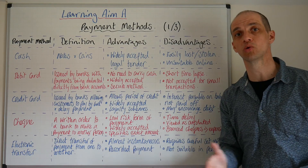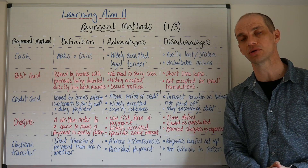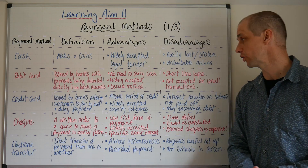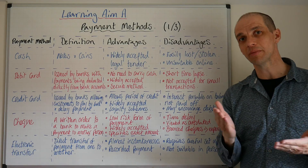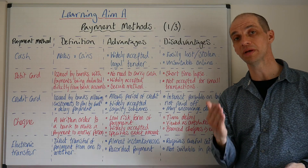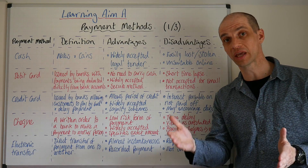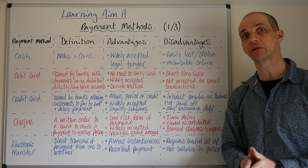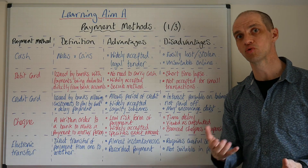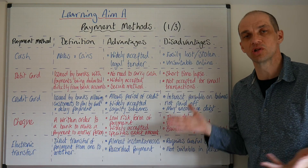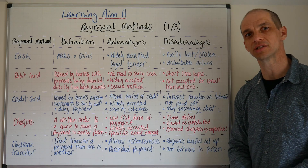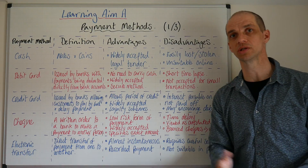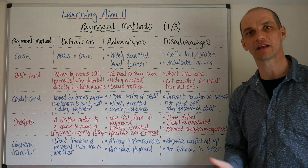There are downsides of course. The first one is that there's a short time lapse between the payment actually being made and it going through — usually about a day or so. Because of that, the money could come out of your account straight away, so you need to make sure you've got sufficient funds and that you're not putting yourself in danger of going overdrawn without an authorised overdraft. It's also not accepted for small transactions — normally you need to spend in excess of five pounds in independent stores to use it.